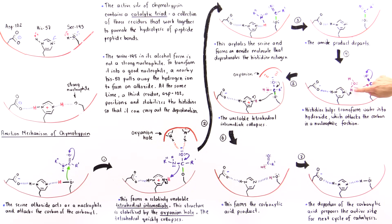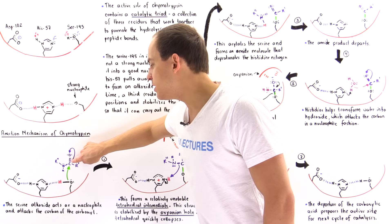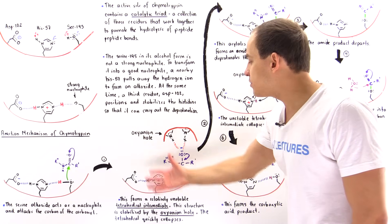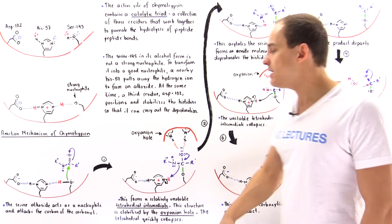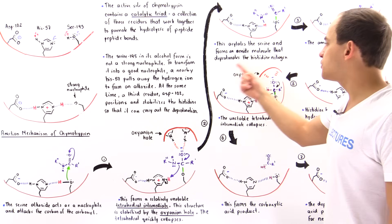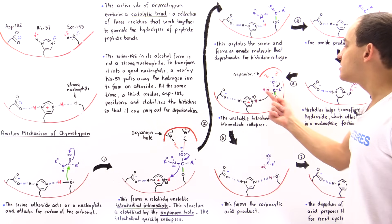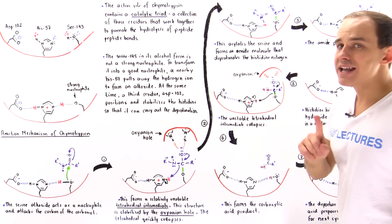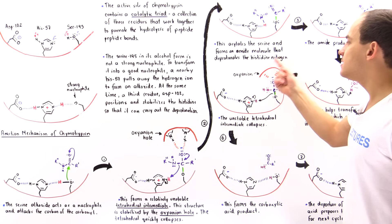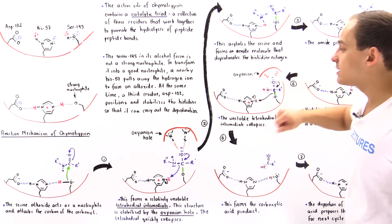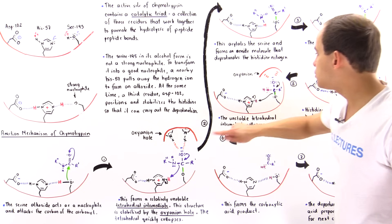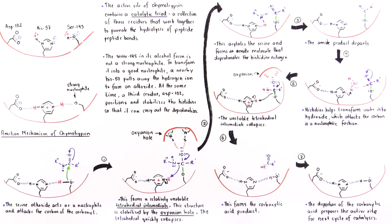The nitrogen takes away the H atom, and the two electrons that were in that sigma bond now nucleophilically attack the carbon, displacing the pi bond in the same way as before. Just as a tetrahedral intermediate formed in step one, we also form a tetrahedral intermediate in step five. Once again, to stabilize this relatively unstable, negatively charged tetrahedral intermediate, the oxyanion hole — containing partially positively charged H atoms — stabilizes the full negative charge on the oxygen.